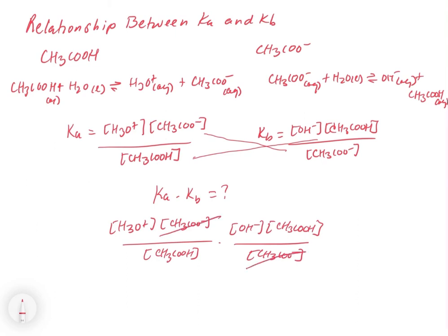the acetates cancel out, the acetic acids cancel out, and what we're left with is the concentration of H3O plus times the concentration of OH minus. And we know that this equals Kw.